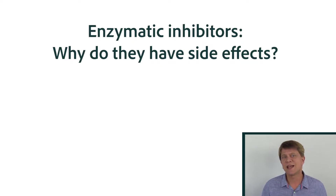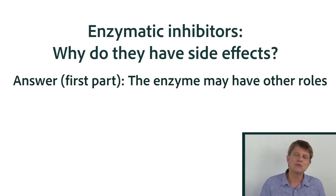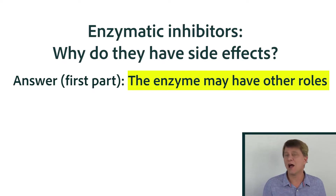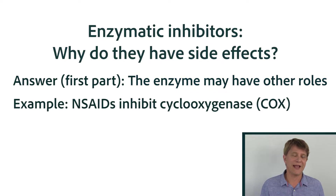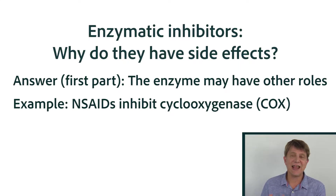Sometimes our medications do the intended action — they act on, for instance, an enzyme — but that enzyme is also used to do something else that we don't want to affect. A very common example of that is found with the non-steroidal anti-inflammatory drugs, or aspirin, or the NSAIDs. They actually affect an enzyme called cyclooxygenase.